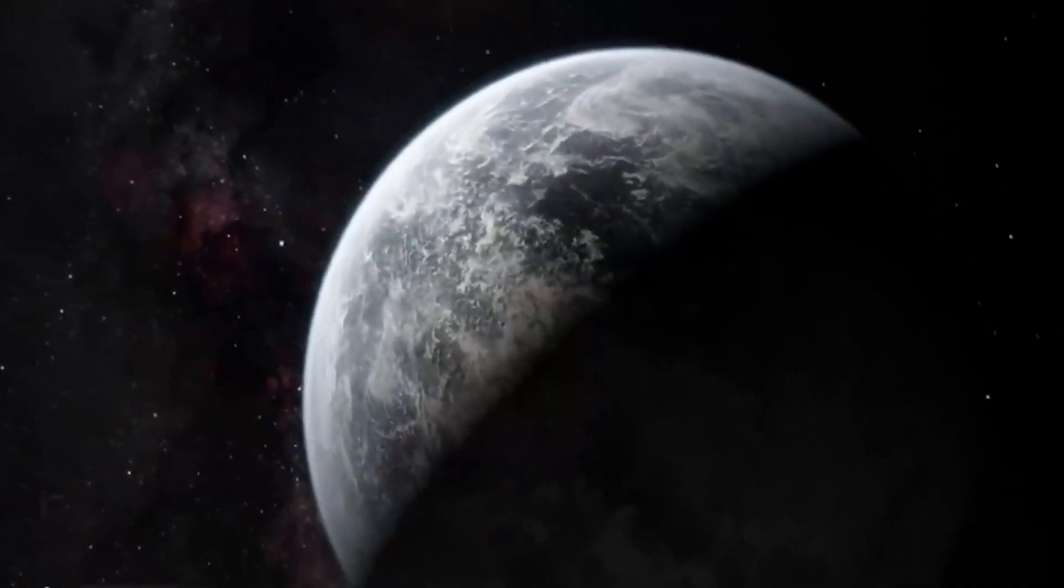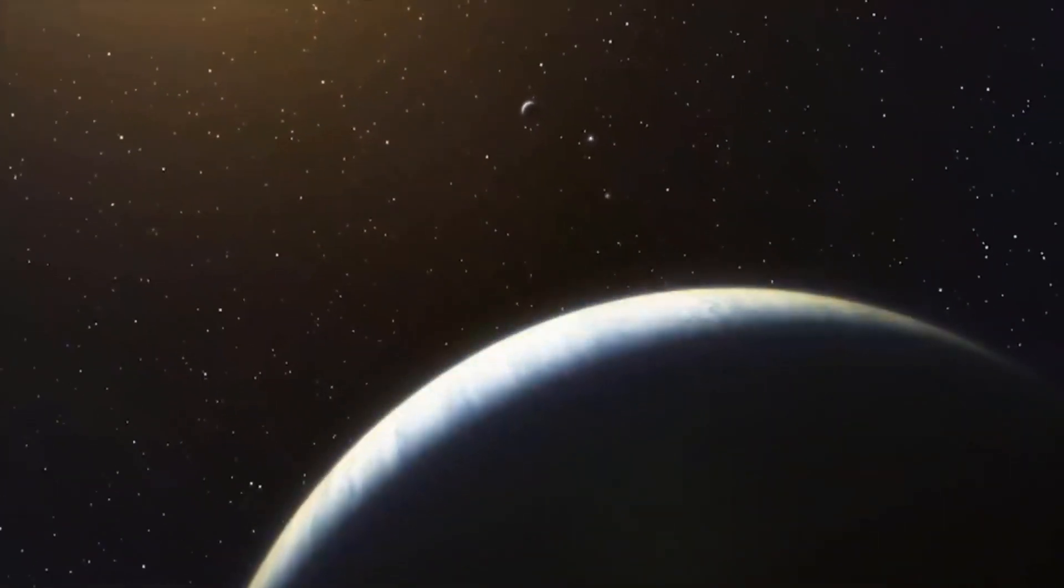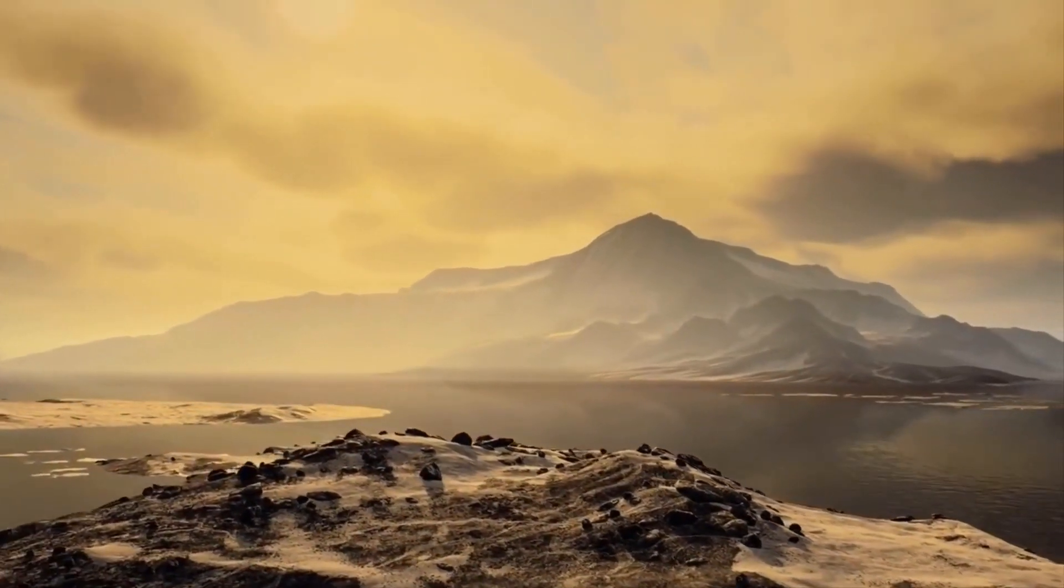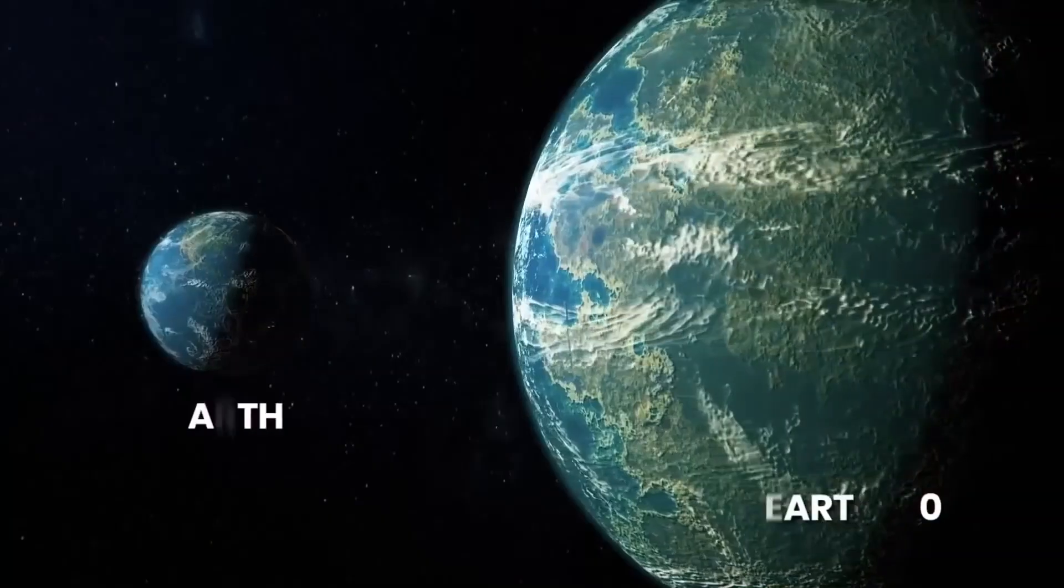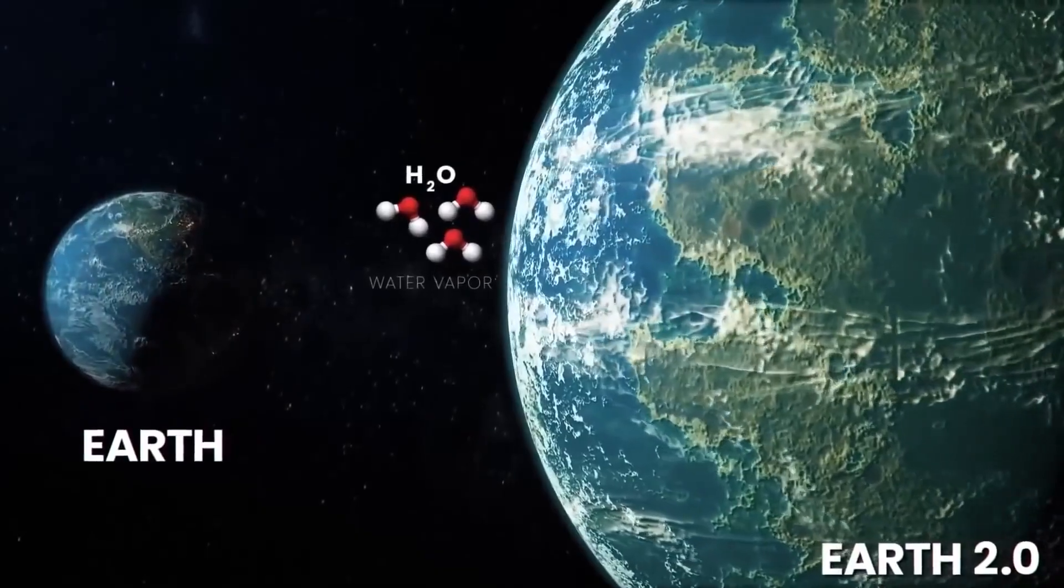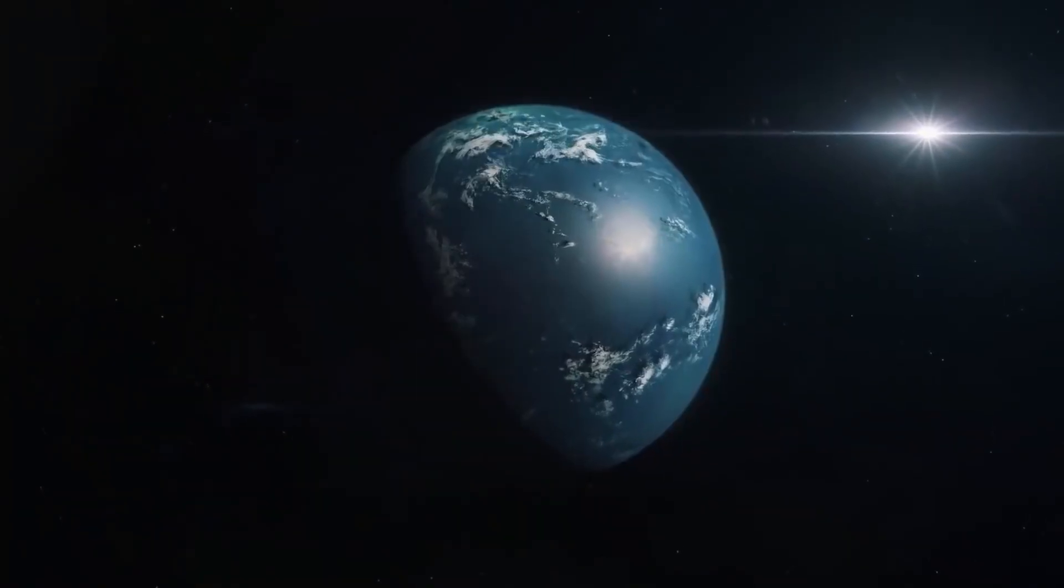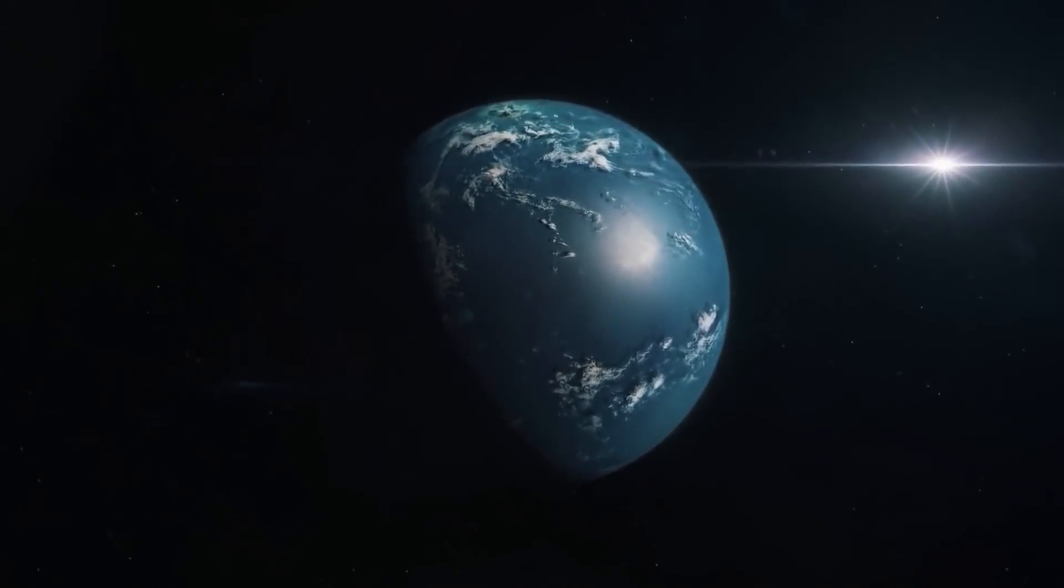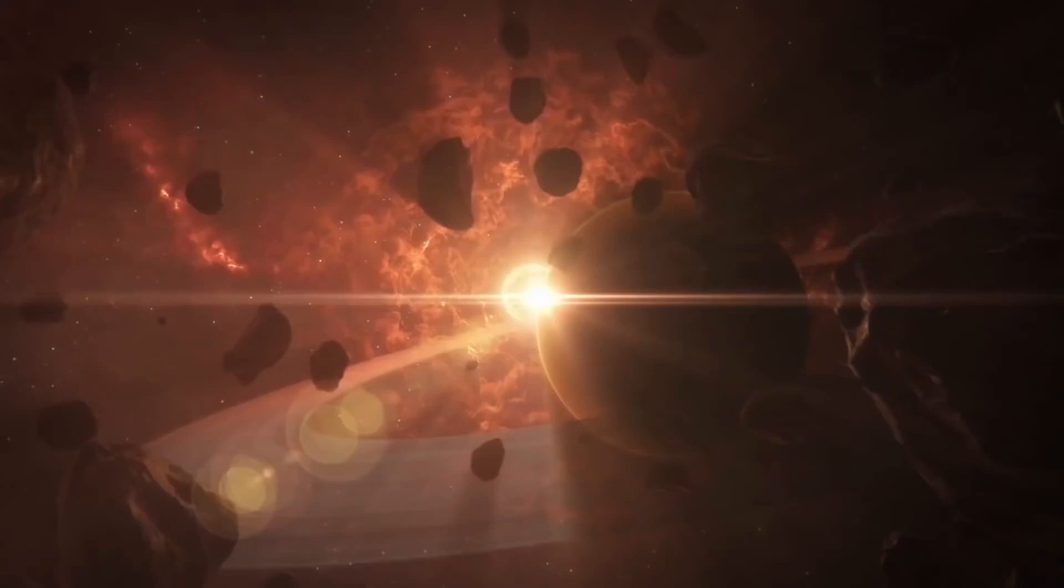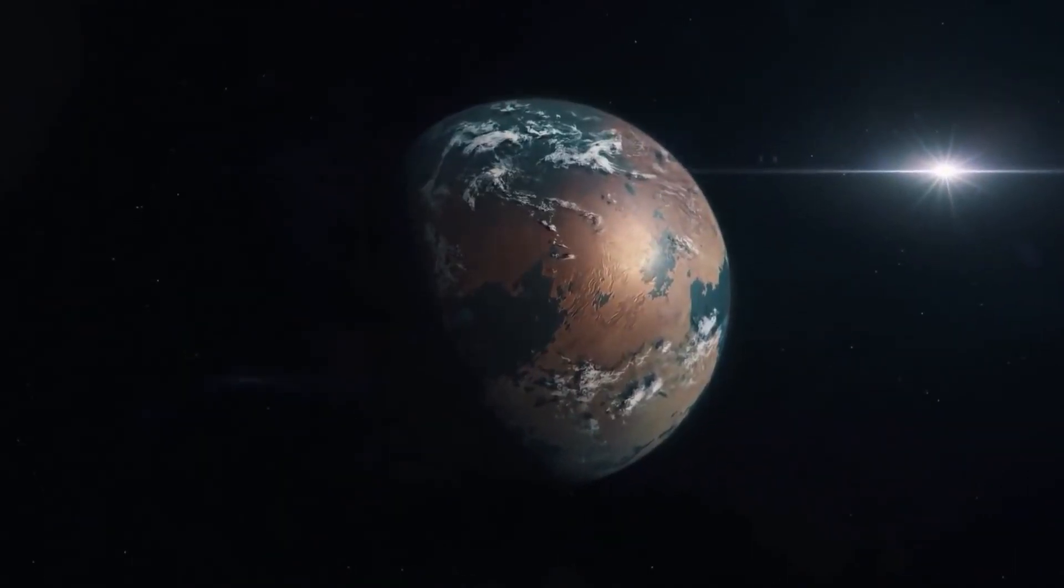Kepler-22b: A Super-Earth in the Habitable Zone. Kepler-22b is classified as a Super-Earth, which means that it is a planet that is larger than Earth but smaller than the gas giants like Jupiter and Saturn. The planet is about 2.4 times the size of Earth and has a mass that is estimated to be between 5 and 36 times that of Earth.